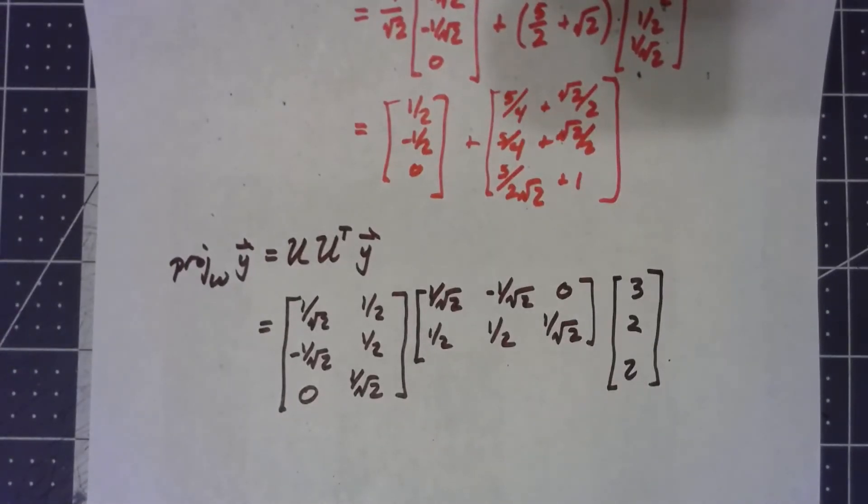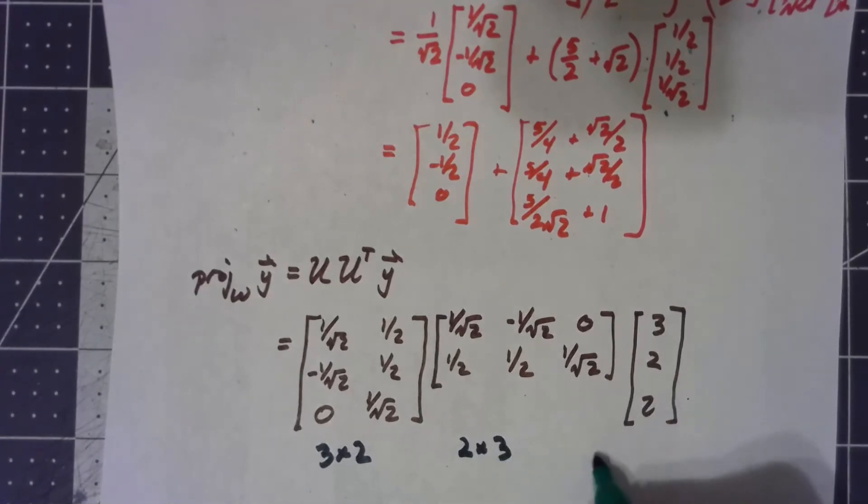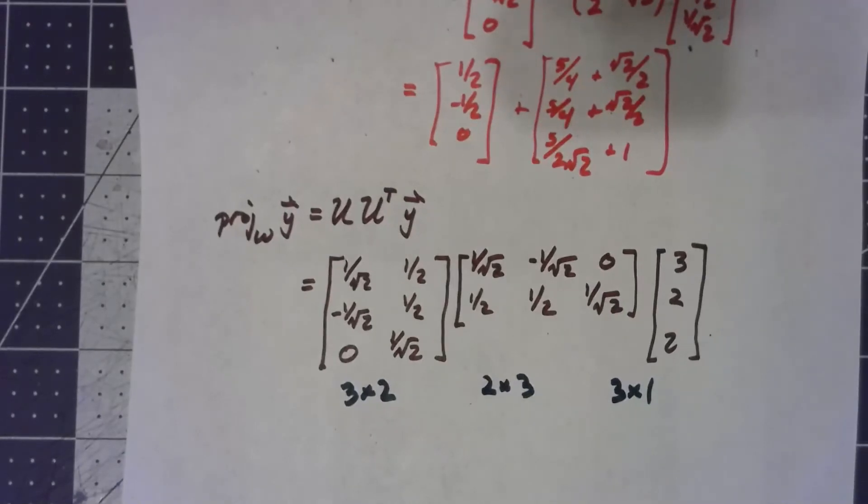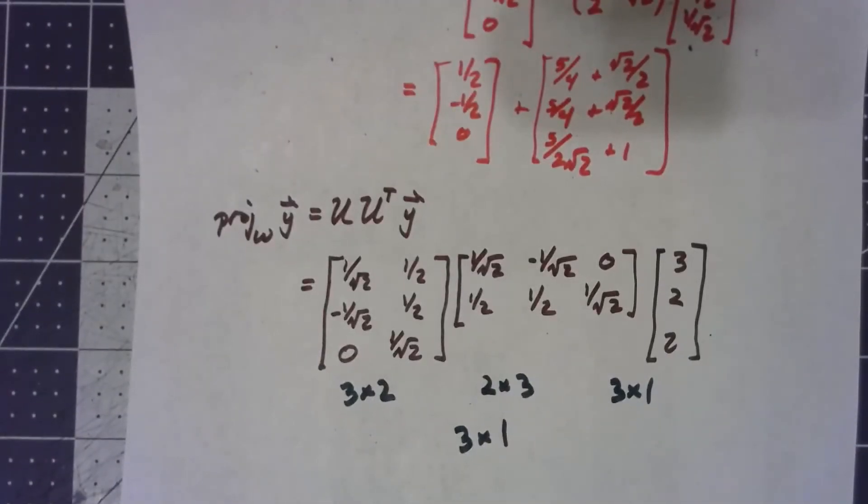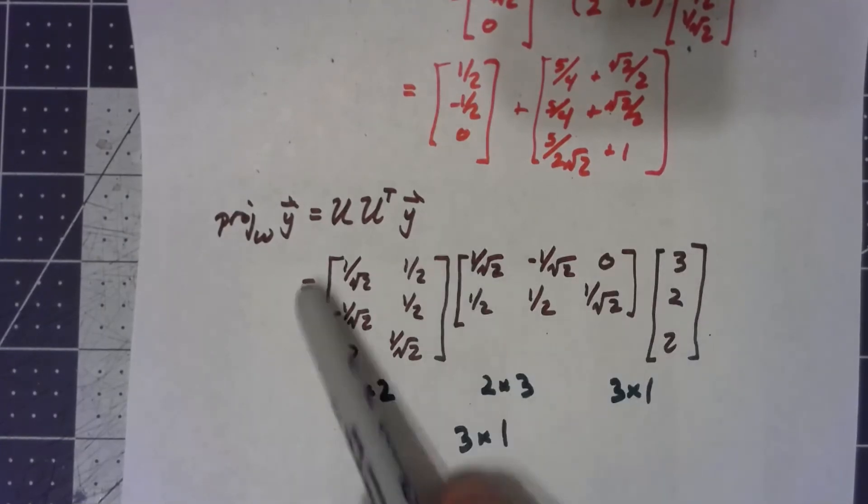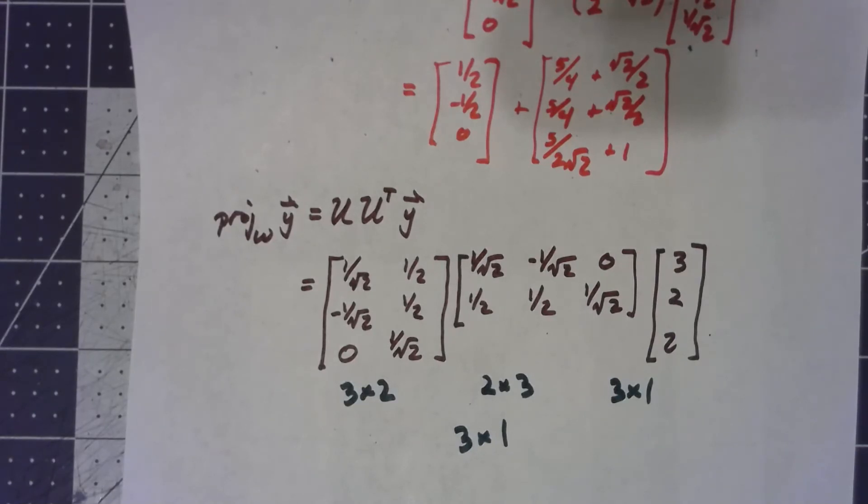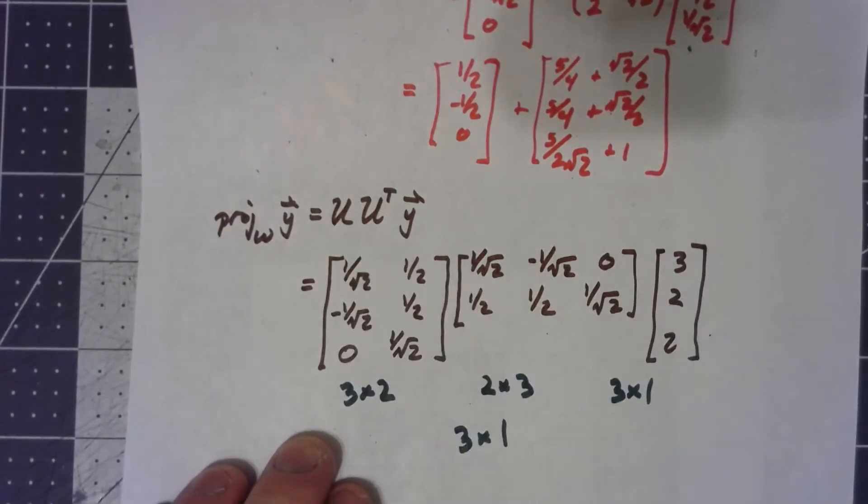This video is getting kind of long, and I'm not sure it's worth going and doing the whole multiplication, but notice how this works. I start with a 3 by 2, this is then a 2 by 3, then a 3 by 1. All those dimensions line up, and so I'm going to end up with a 3 by 1 vector. If you do all the calculations right, this multiplication should give you the same thing as this. The reason is that this matrix multiplication is kind of just doing these things up here. Because this part of it, this times this, is just the dot product of my basis vectors with this. That's giving me the linear combinations of the columns here, which is exactly what the previous formula did. It's just another way of looking at the same thing.